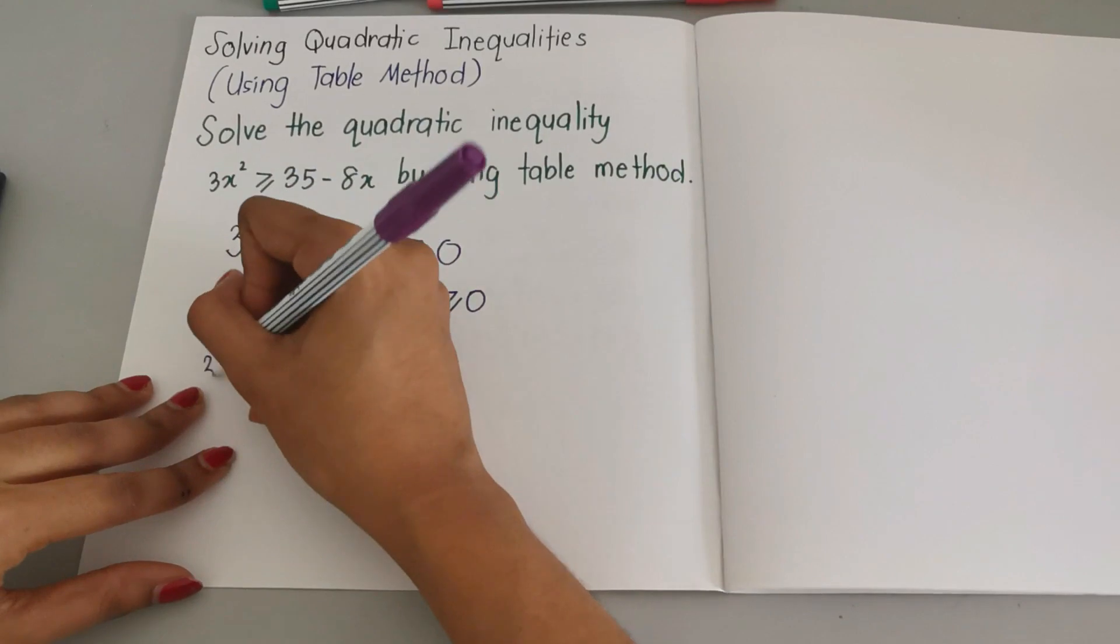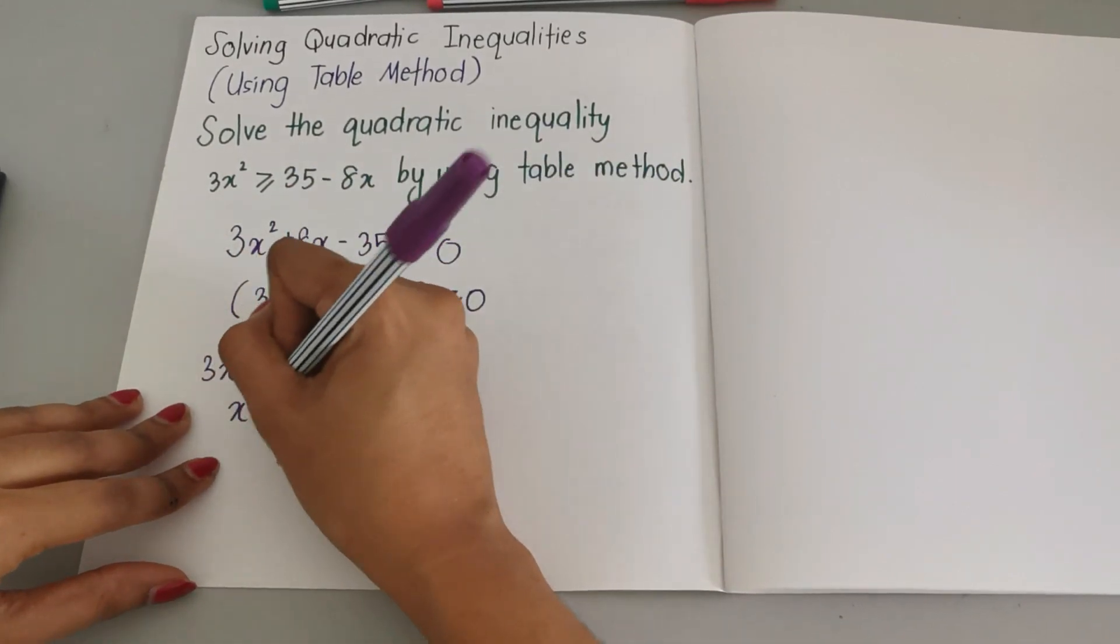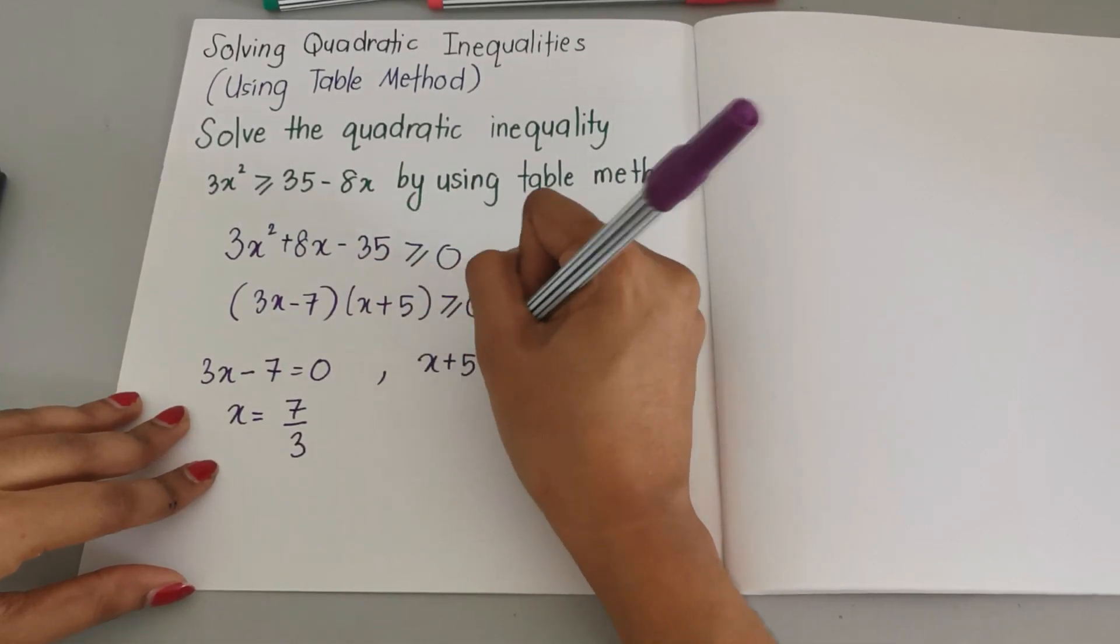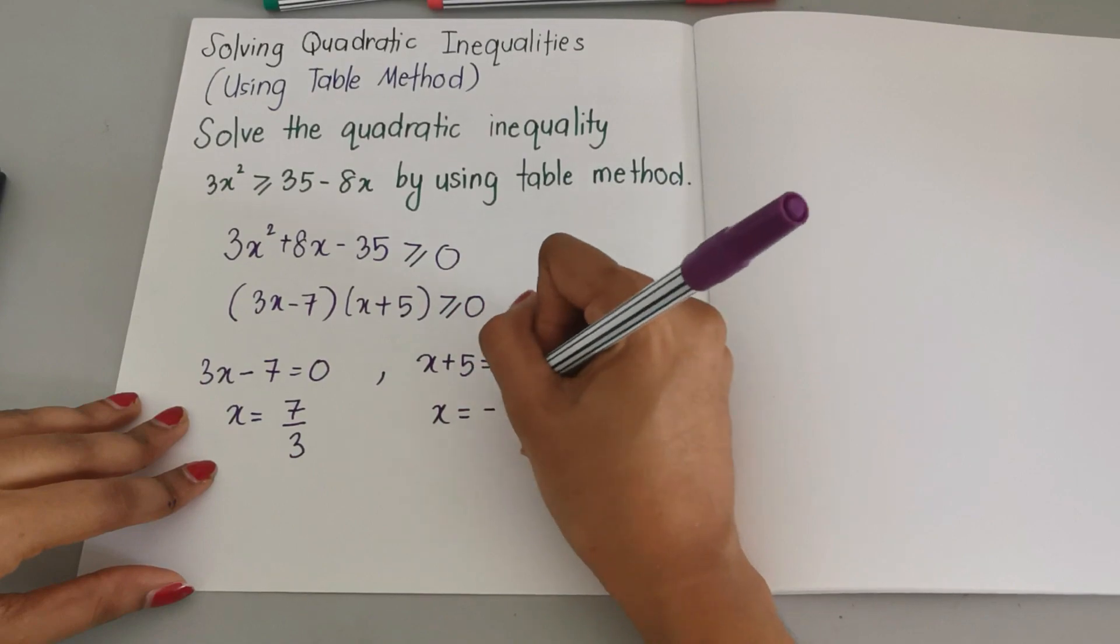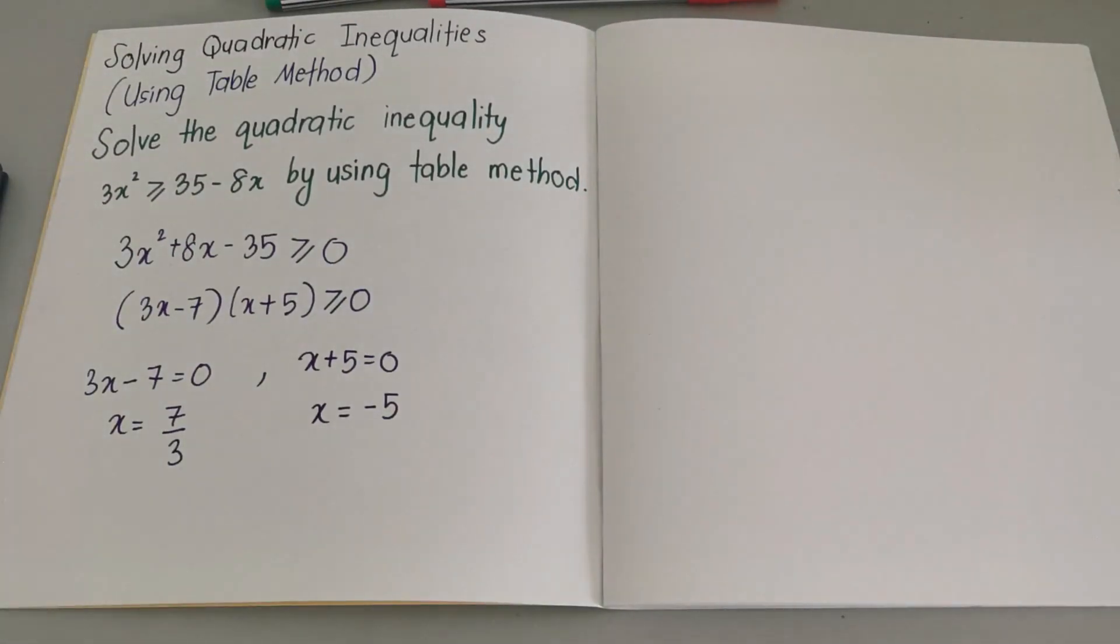Let me write it down here: 3x - 7 equals to zero, so x equals 7 over 3. The other one x + 5 equals 0, x equals negative 5.